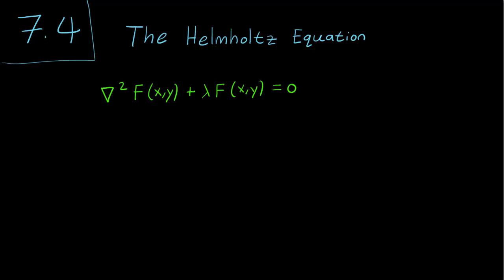Hello class, this is section 7.4, and in this video we are going to discuss the Helmholtz equation. This is a higher dimensional analogue of the eigenvalue problem that we dealt with in the first few chapters of this course.